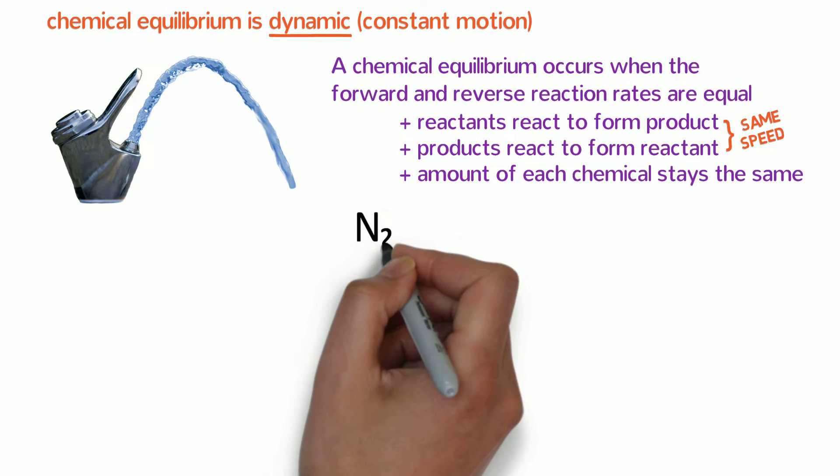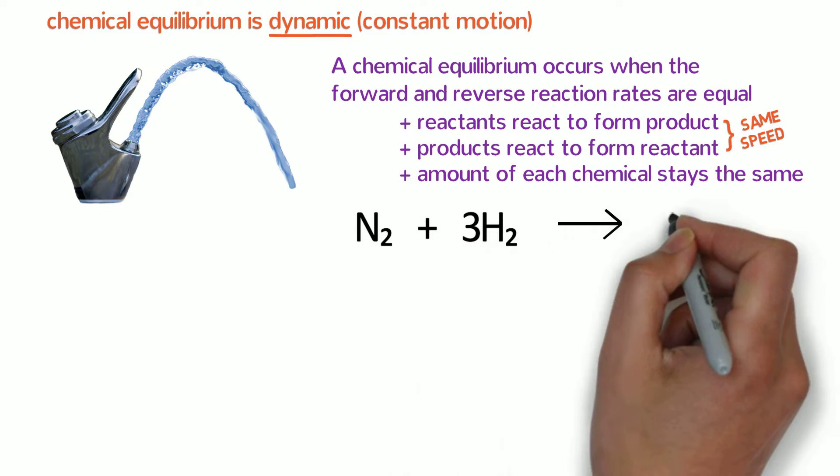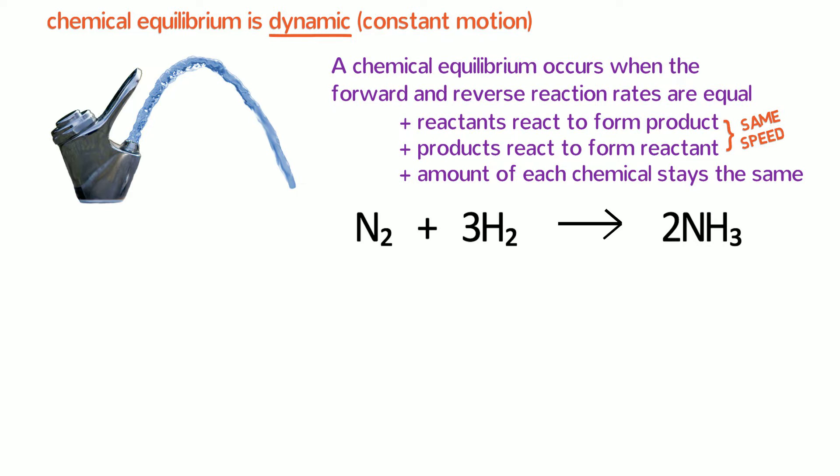Consider the following reaction. Nitrogen reacts with hydrogen to form ammonia. This reaction is known as the Haber-Bosch process, and like nearly all reactions, it can also go in reverse. That is, ammonia will also decompose to reform nitrogen and hydrogen. What does that look like?